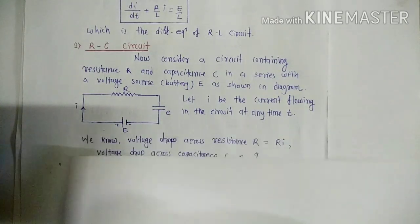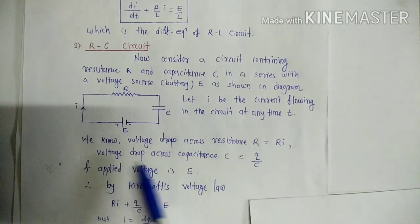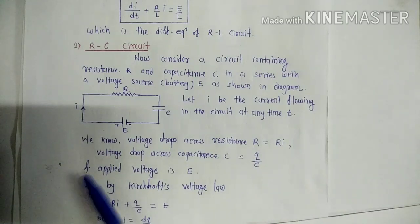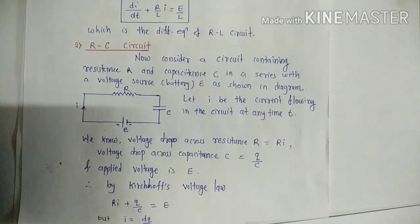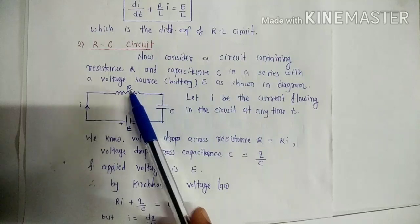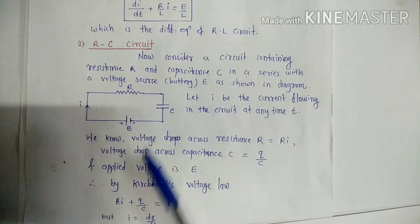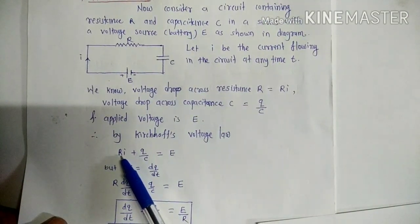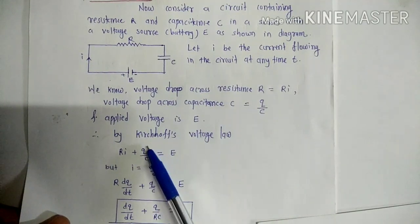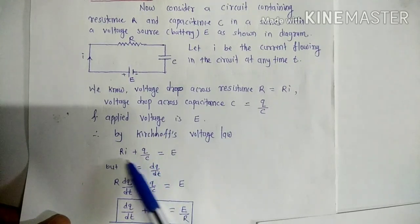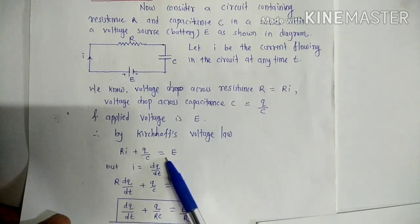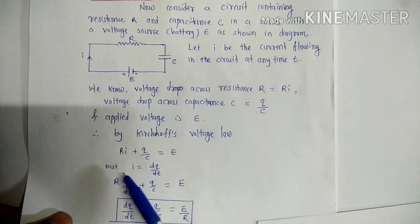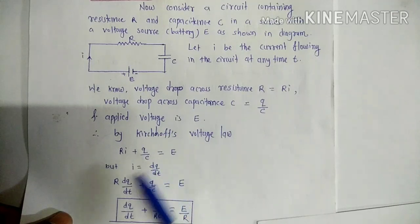Using these basic relations — voltage drop across resistance R is Ri, voltage drop across condenser C is Q/C, and the applied voltage source is E — by Kirchhoff's Voltage Law, the algebraic sum Ri + Q/C equals the total electromotive force E. Since I = dQ/dt, substituting gives R dQ/dt + Q/C = E.